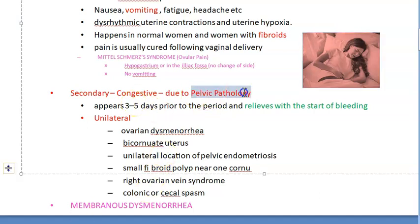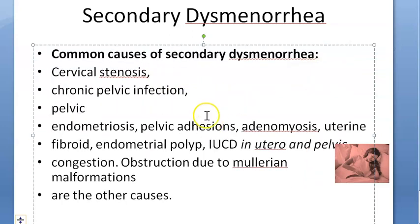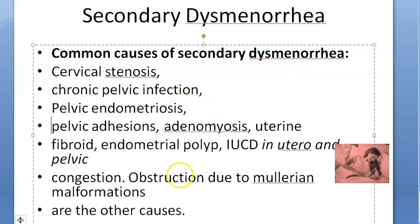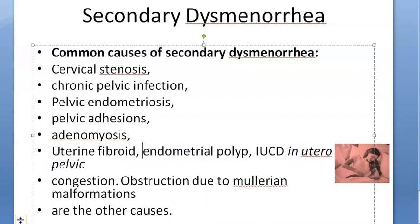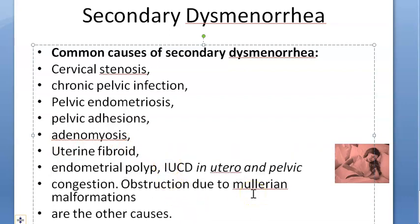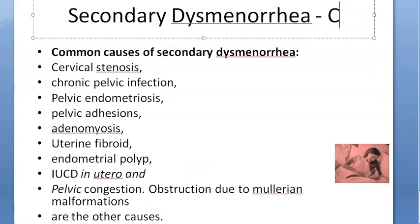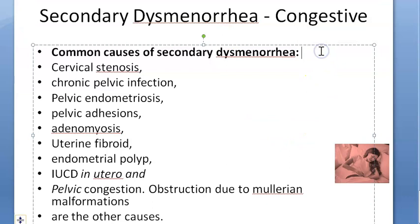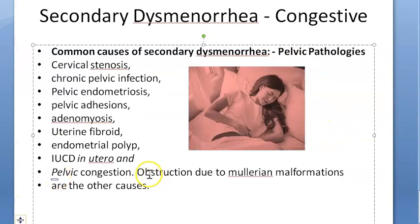Causes of secondary dysmenorrhea include: cervical stenosis, chronic pelvic infection (PID), pelvic endometriosis, pelvic adhesions, adenomyosis (endometrial tissue inside the uterine wall), uterine fibroids, endometrial polyp, IUCD in utero — because the uterus tries to contract and push the intrauterine contraceptive device out — pelvic congestion (hence the name 'congestive dysmenorrhea'), and obstruction due to Müllerian malformations.